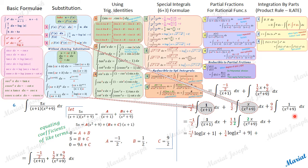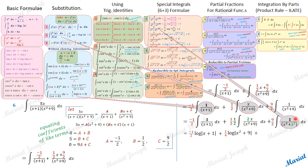For the remaining term, 1/(x²+9), there is no first degree term in the numerator, so substitution won't work. Instead, this fits the pattern 1/(x²+a²), where 9 is rewritten as 3². With a=3, the formula gives (1/a)·tan⁻¹(x/a). So (9/2)·(1/3)·tan⁻¹(x/3) = (3/2)·tan⁻¹(x/3) + C.